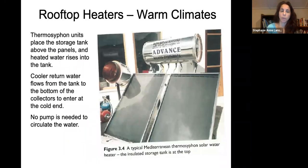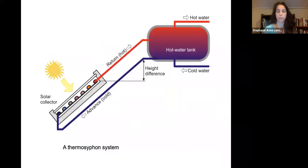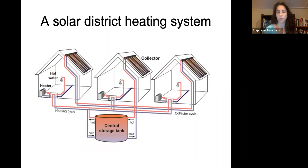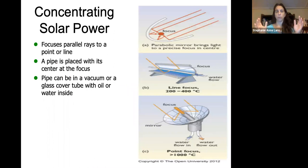In warmer climates, a thermosyphon unit places the storage tank above the solar unit. Hot water rises in and cooler water returns to the bottom — the convection properties circulate the water without needing an energy pack or heat pump. You can also have a solar district heating system using radiant floors and showers, with a central storage tank where cold water is collected and hot water is distributed through buildings and residential homes.